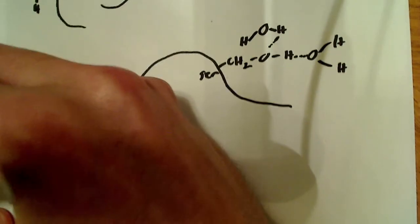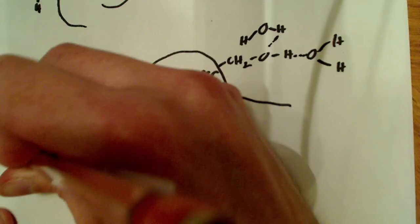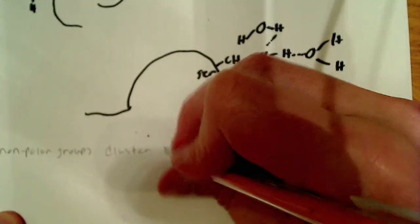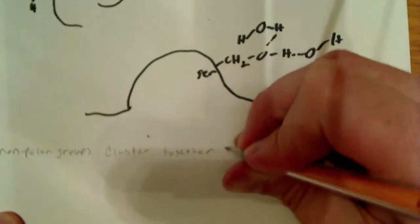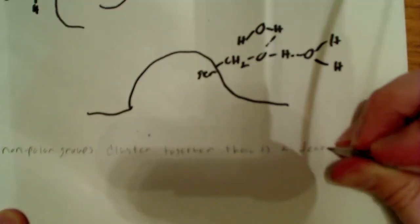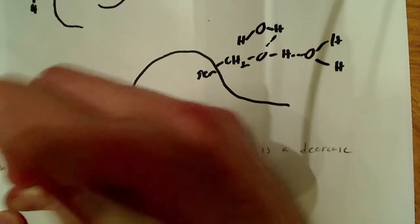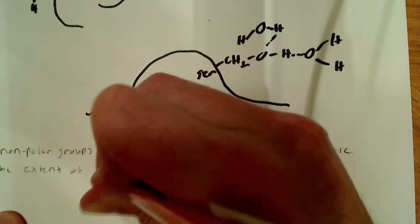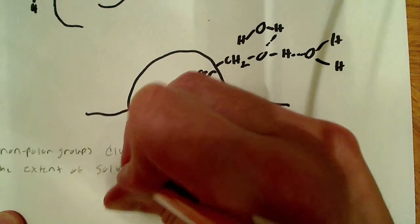So what I want to say about this is that when nonpolar groups cluster together there is a decrease in the extent of salvation, or I should say of the salvation layer.